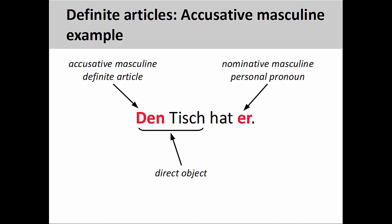Definite articles are really important for helping us make sense of what is going on in a sentence. You'll recall from an earlier presentation that we can emphasize sentence elements in German by putting them in the first position. Although den Tisch here comes in the first position, the masculine definite article tells us that it is the direct object and in the accusative case. The meaning of the sentence is therefore still the same as in the prior slide.